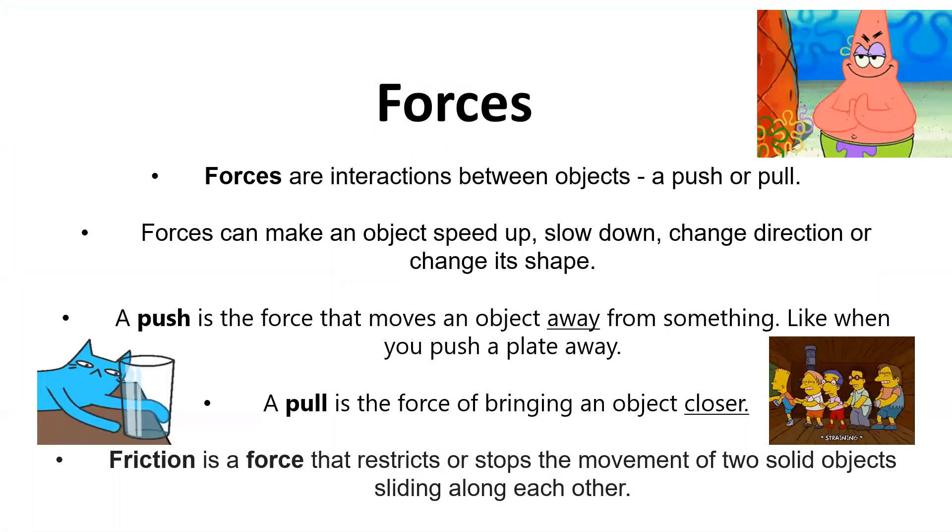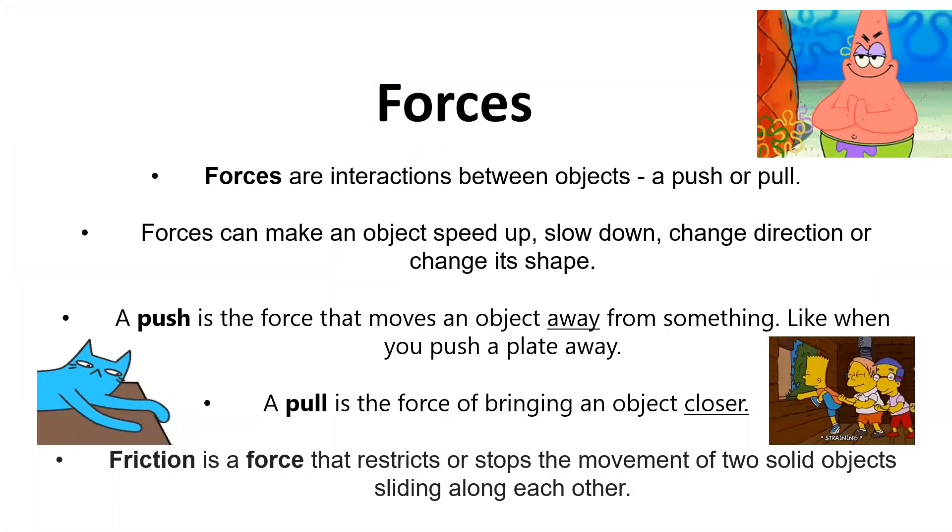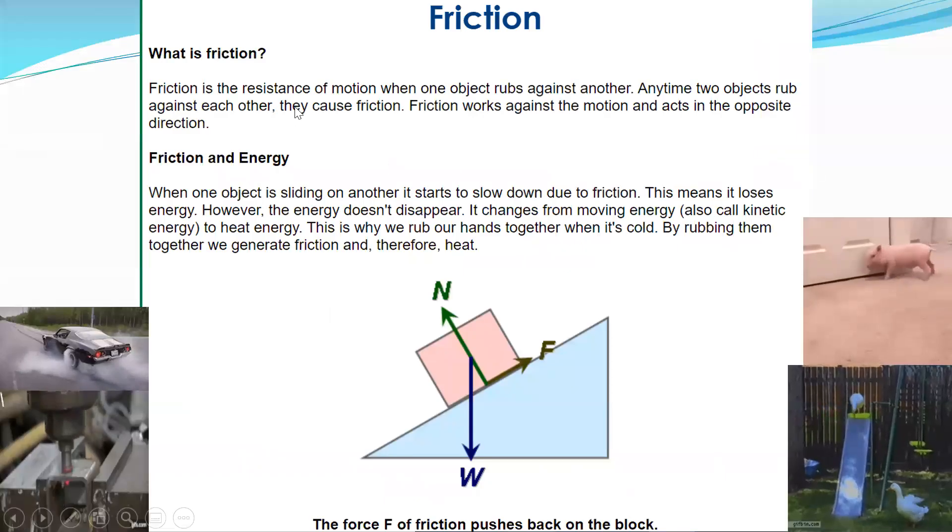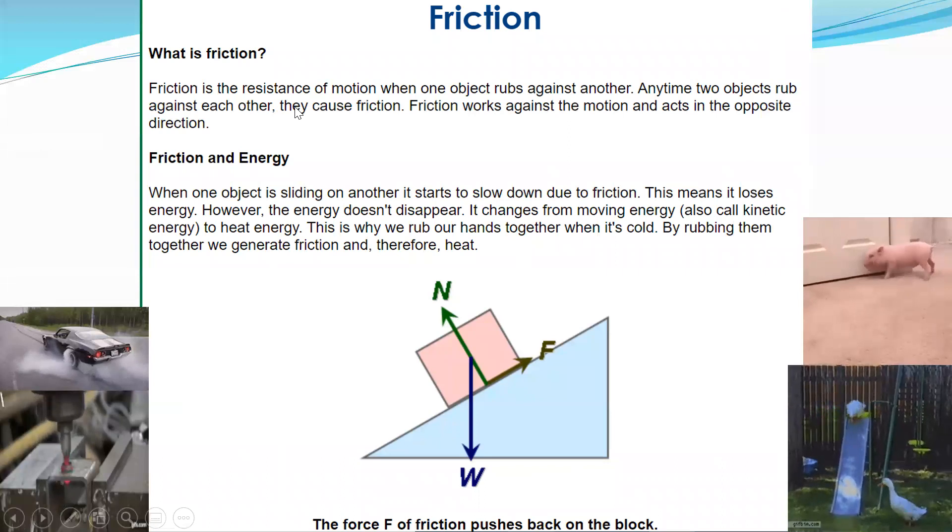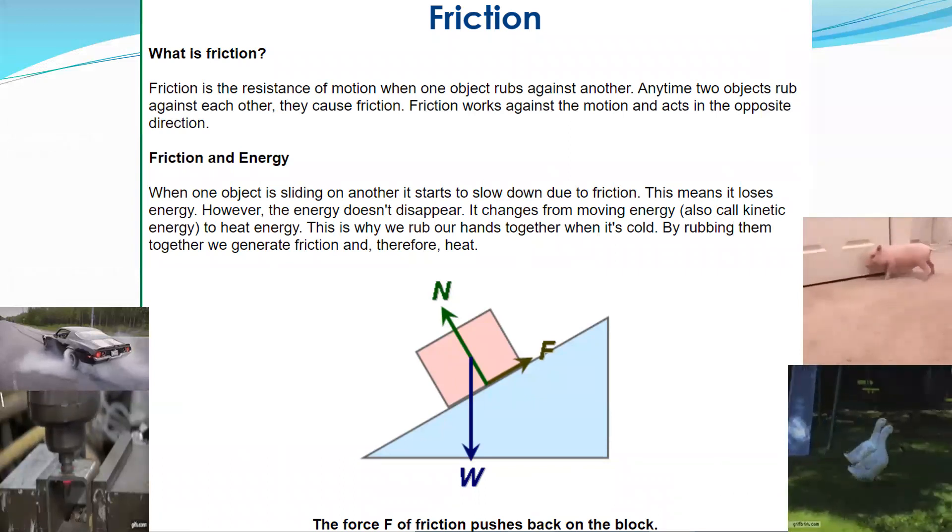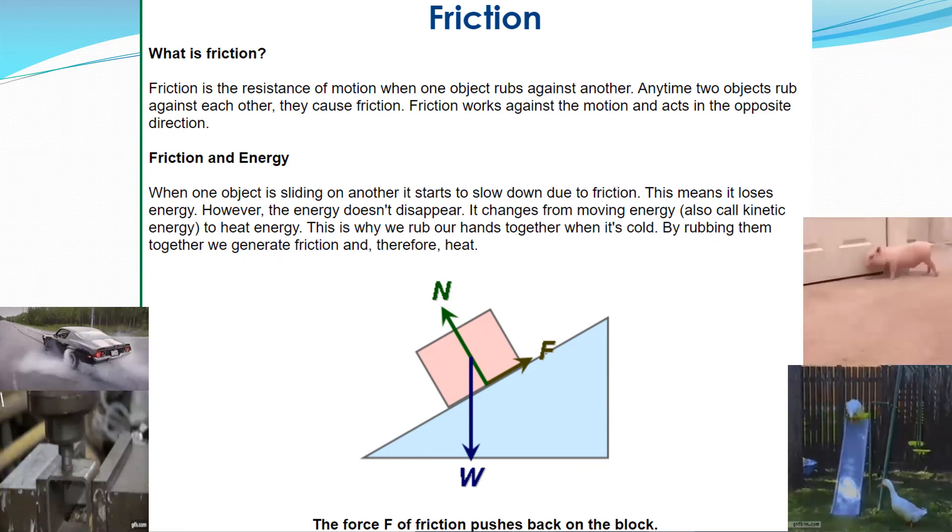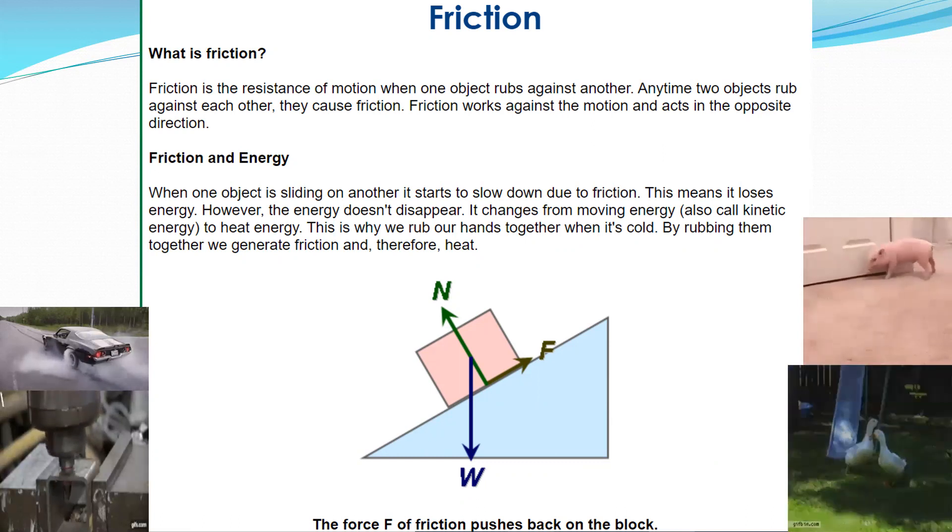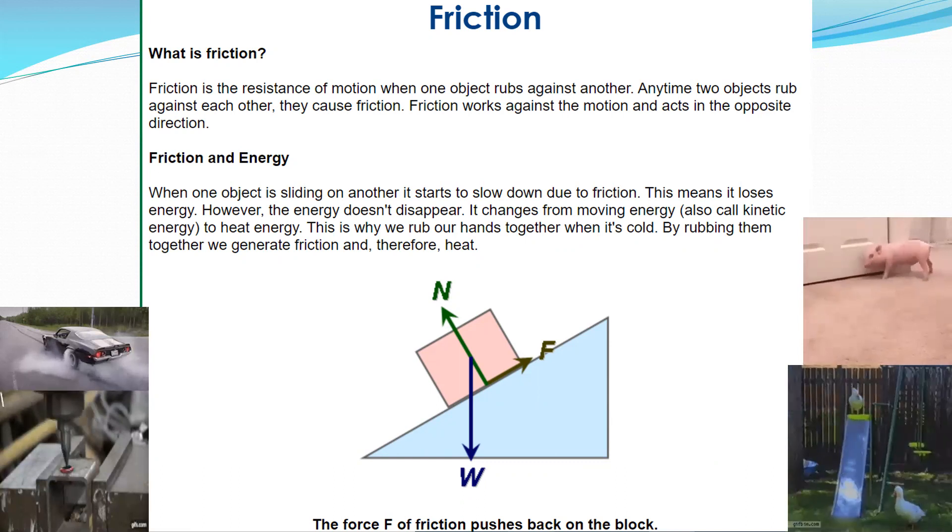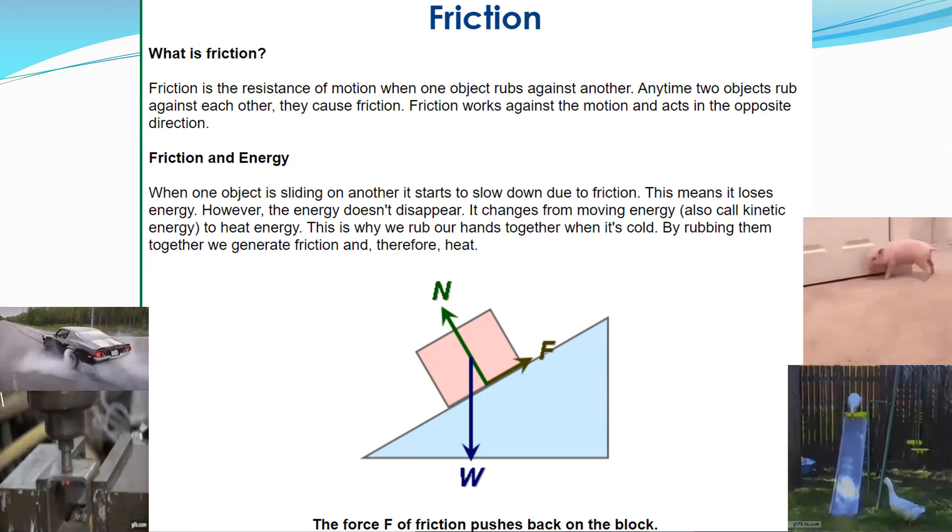Like Patrick here, sliding his hands back and forth. He is creating friction. So what is friction? Friction is the resistance of motion when one object rubs against another. Anytime two objects rub against each other, they cause friction. Friction works against the motion and acts in the opposite direction.